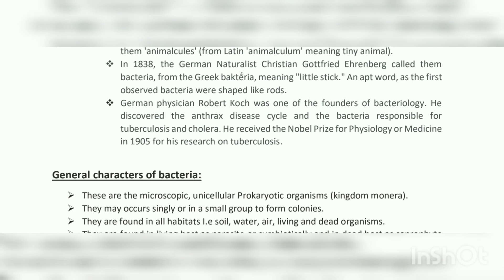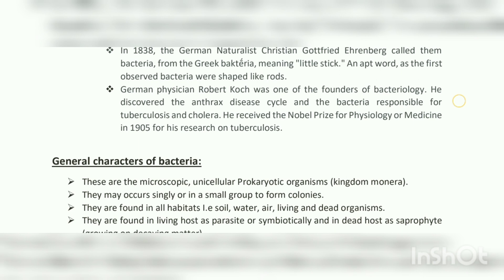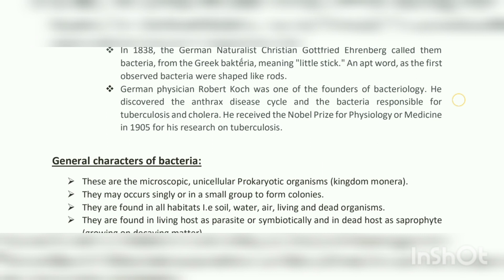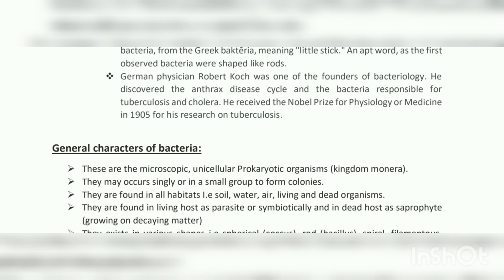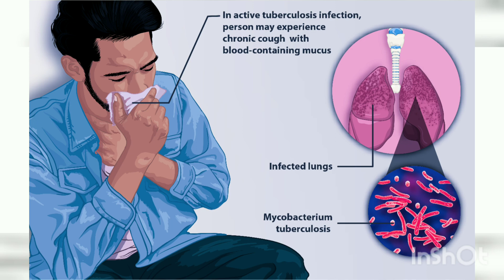Gram-positive bacteria are blue or purple in color. Anthrax occurs naturally in soil and commonly affects domestic and wild animals, and only rarely affects humans.